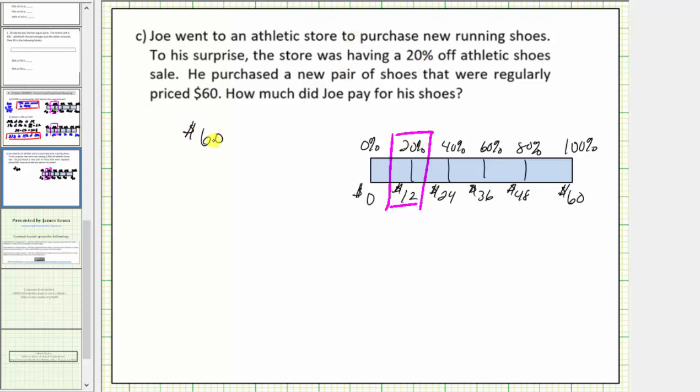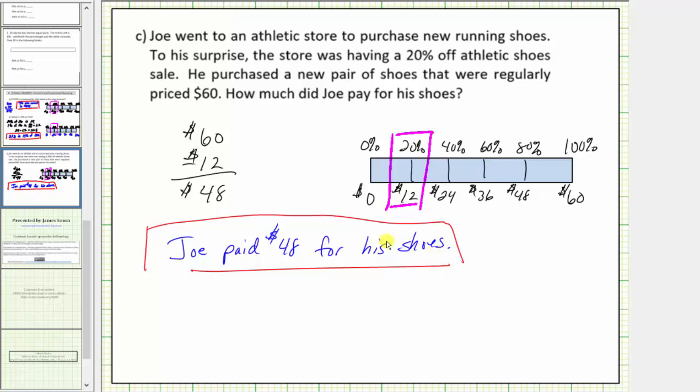minus 20%, which is minus $12, which is equal to $48. So Joe paid $48 for his shoes. I hope you found this helpful.